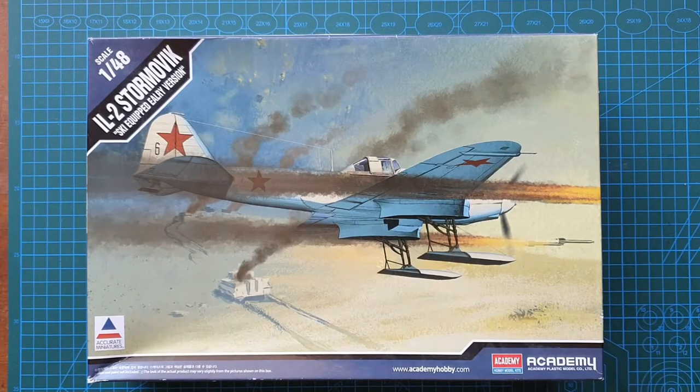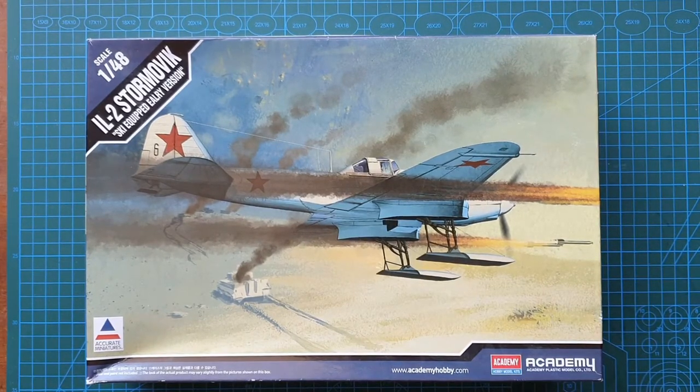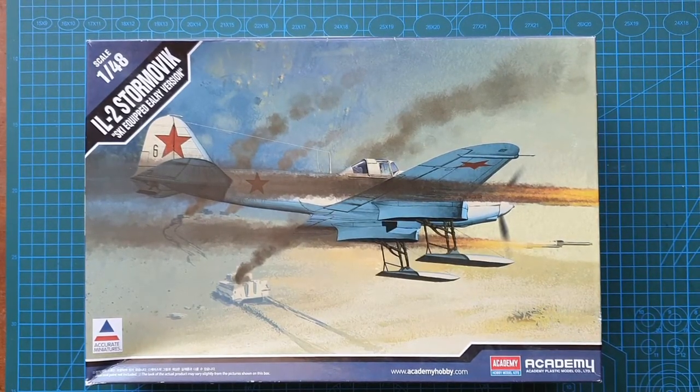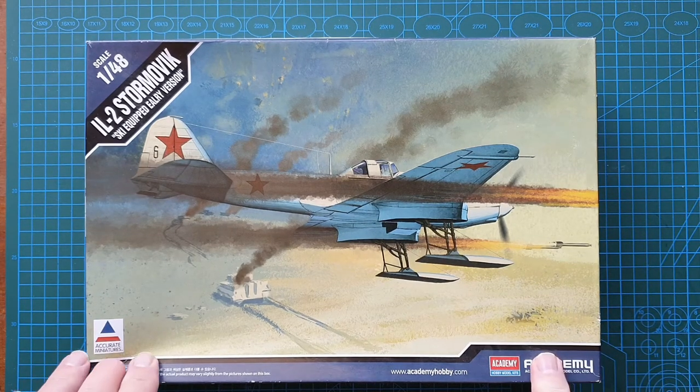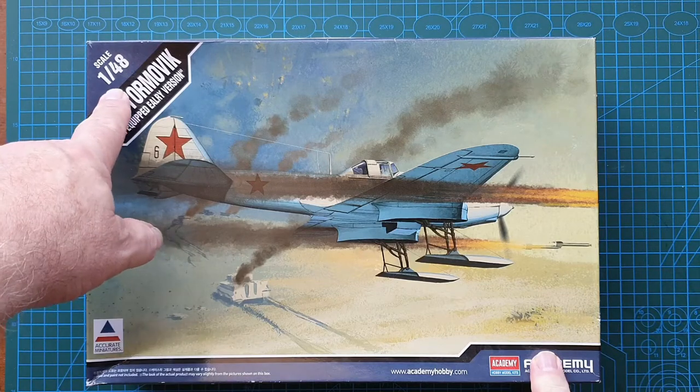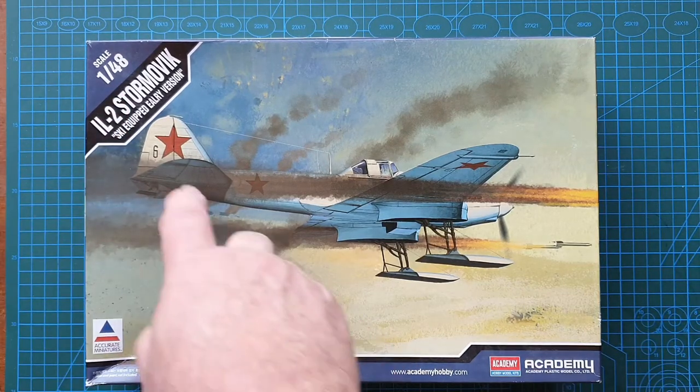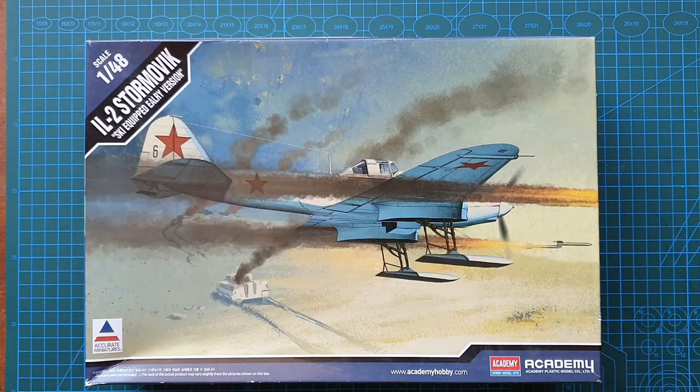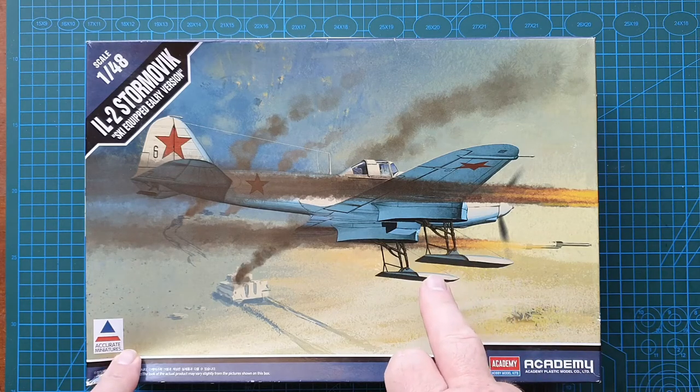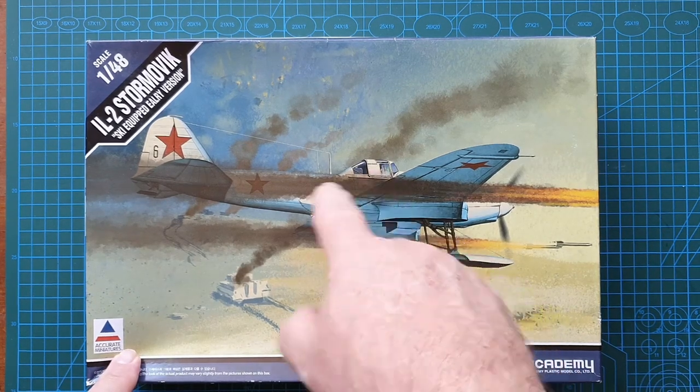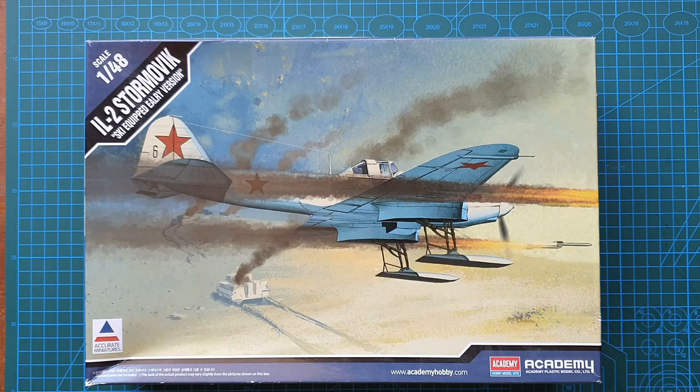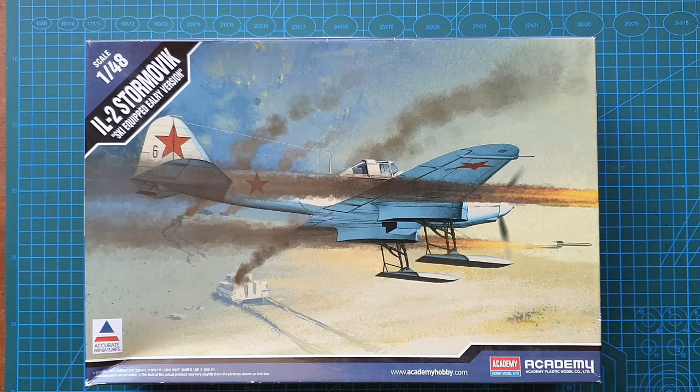Hi guys, hope you're all well and welcome to another kit review. Today we're going to be looking at a kit from Academy in 1:48 scale—the IL-2 Sturmovik, ski-equipped early version. The early version only had the pilot; the next version of the IL-2 had a pilot and a rear gunner.